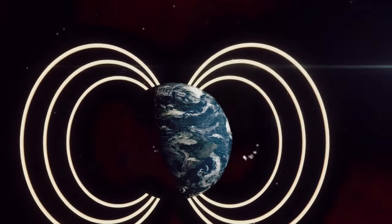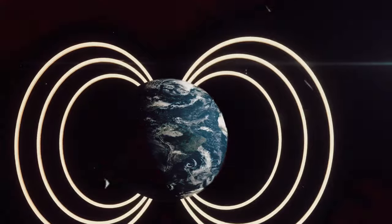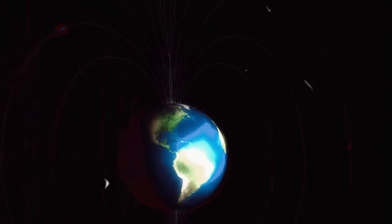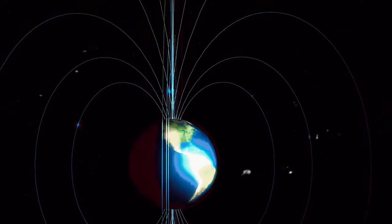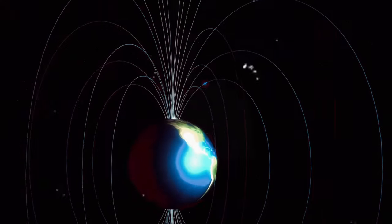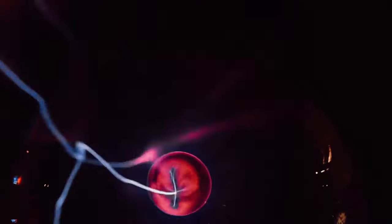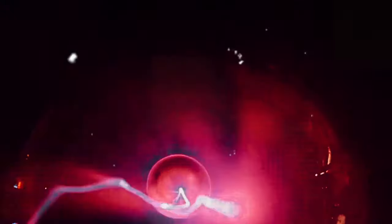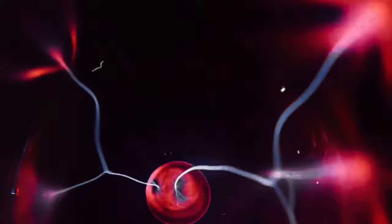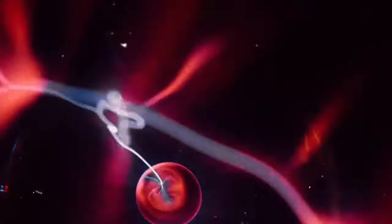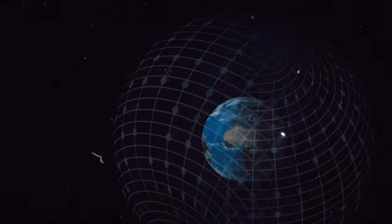Well, they play a significant role in generating the Earth's magnetic field. The movement of the liquid iron within the outer core generates electric currents, which in turn produce magnetic fields. This interaction between the electric currents and the magnetic fields creates a self-sustaining dynamo effect, consequently giving birth to the Earth's magnetic field.